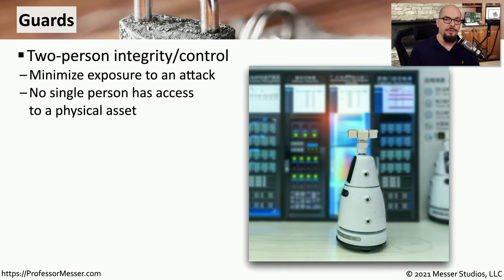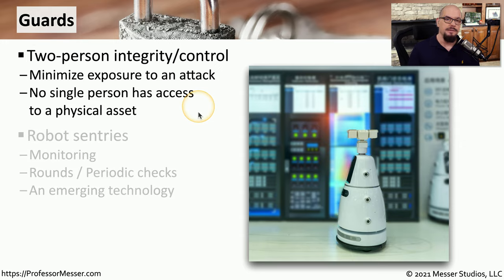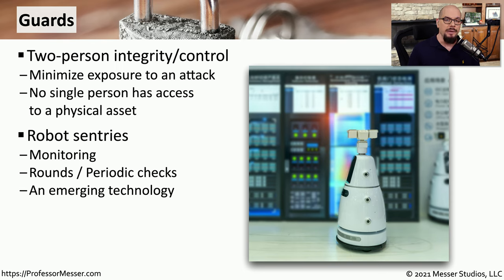If you've worked somewhere with security guards, you may have noticed it's unusual to have a single security guard working — it's very common to see more than one working at the same time. This is called two-person integrity or two-person control, a way to minimize the exposure you might have, especially for someone in control of access to a building. This ensures that no single person would have access to any particular asset, as entering a locked area may require two separate security guards to be present. In some facilities, a robot can replace a human doing rounds periodically, allowing human guards to perform more important tasks.